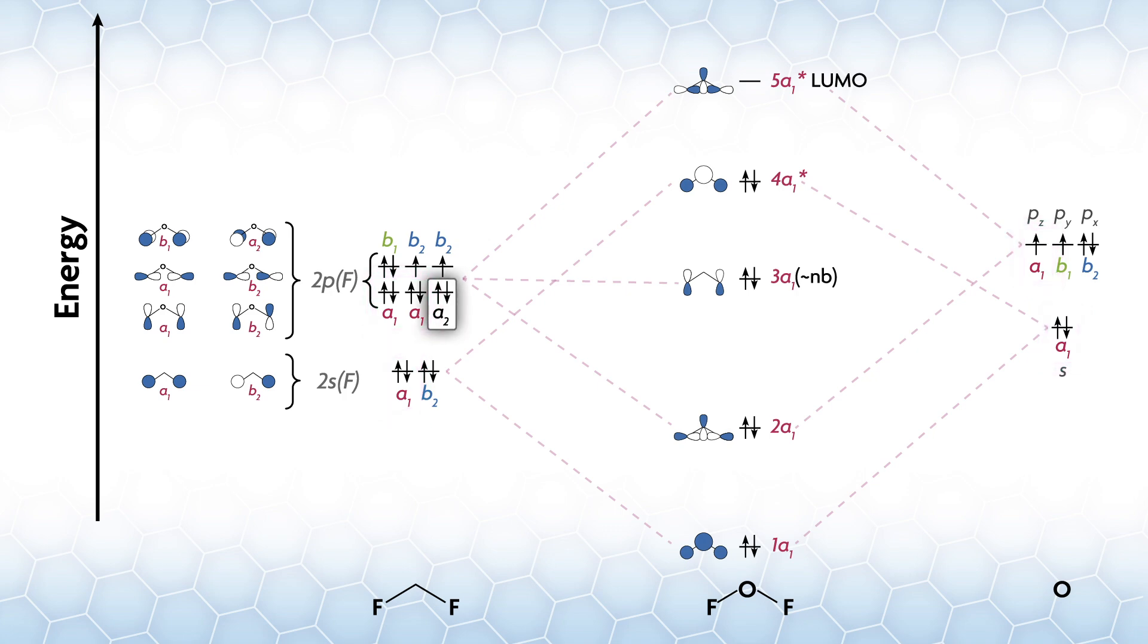Next, there is an A2 SALC with no match on oxygen, so it will be strictly non-bonding, and we'll add it to the MOs. There's a relatively simple two-orbital interaction with B1, so let's add those bonding and antibonding orbitals. Finally, there are three SALCs of B2 symmetry, but only one orbital on oxygen that is B2. As a result, we can form one bonding antibonding pair, and the other two SALCs will be non-bonding.